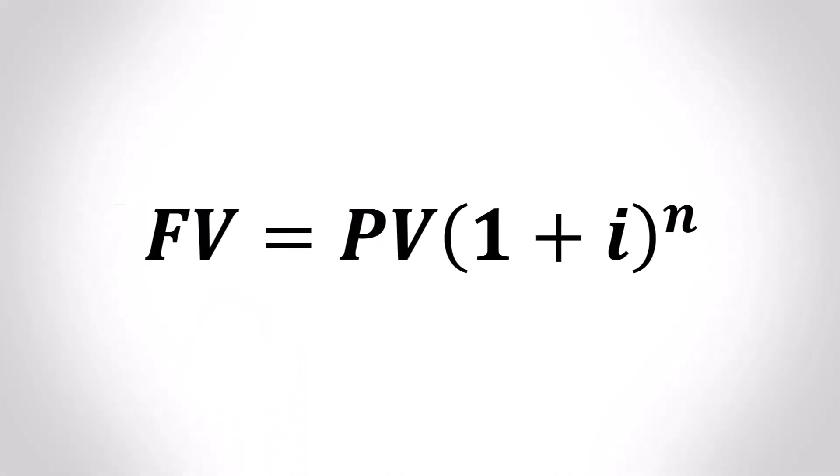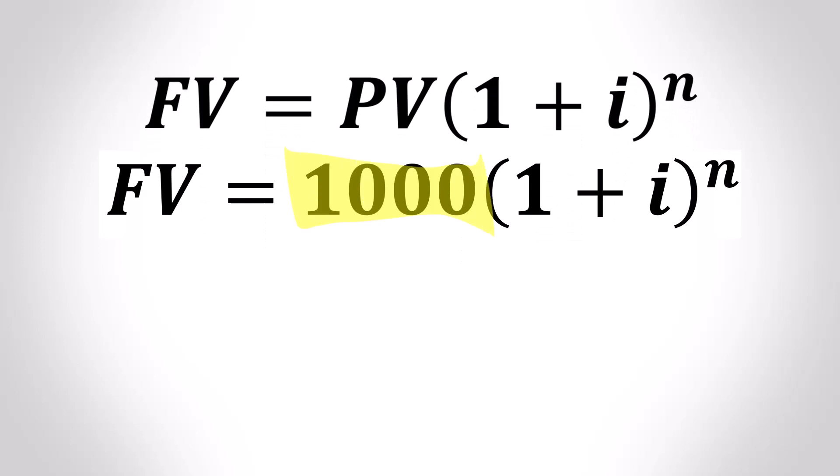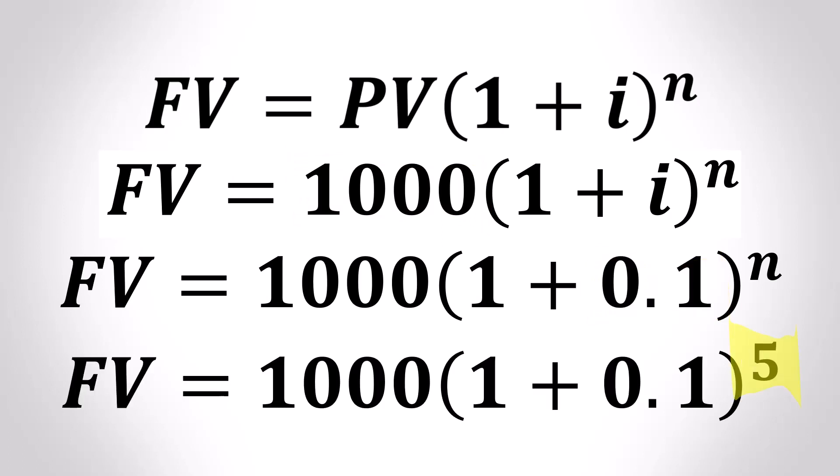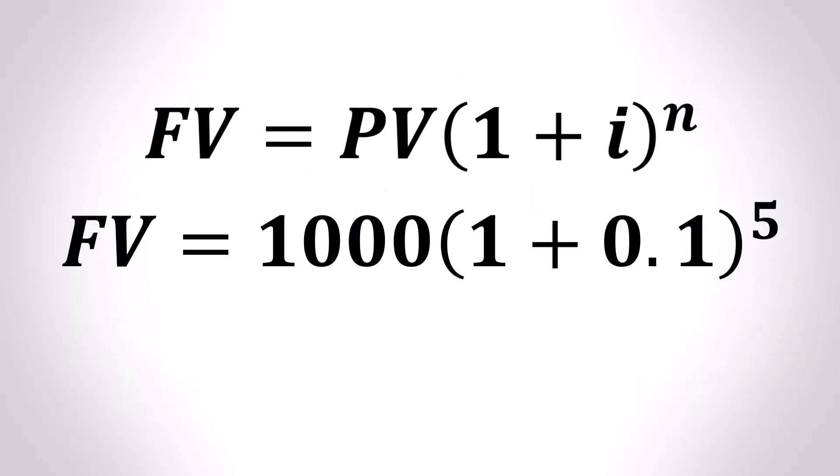The future value formula allows us to calculate this value almost effortlessly. Substituting 1,000 as PV, which is your present value, 10% as a decimal into I, which is your interest per period, and 5 into N, which is the total number of compounding periods, we learn that by the end of the 5th year, your initial savings of $1,000 will mature to $1,610.51.